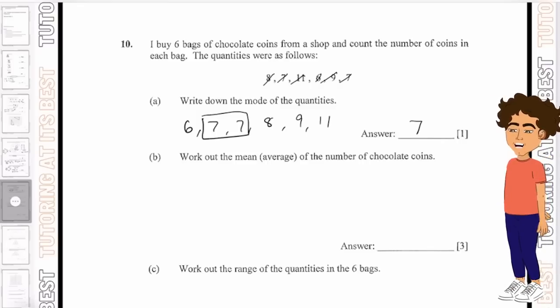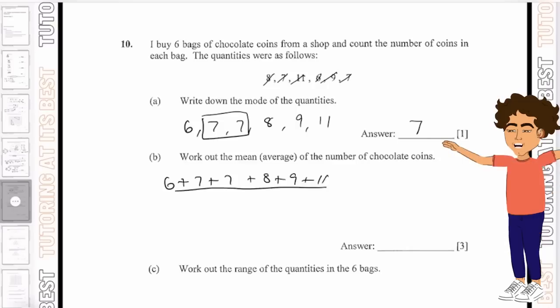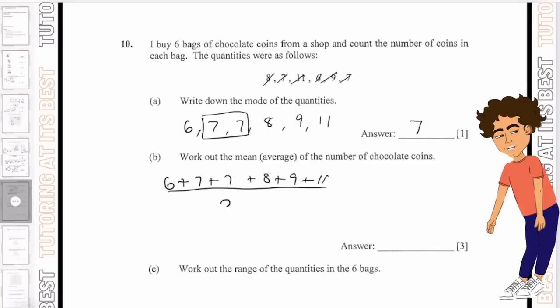And then part B asks us to work out the mean of the number of chocolate coins. If you remember how to calculate the average, we have to add up all of the numbers and divide them by how many there are.